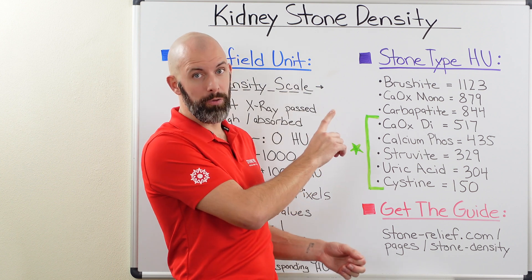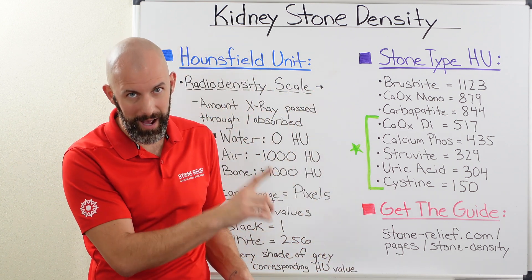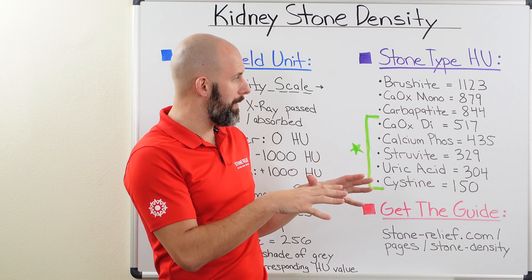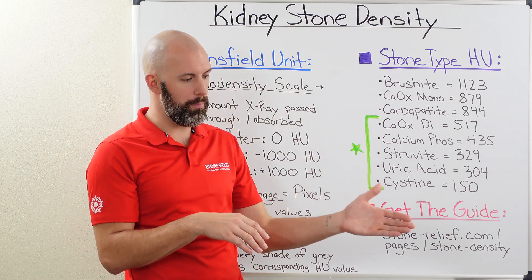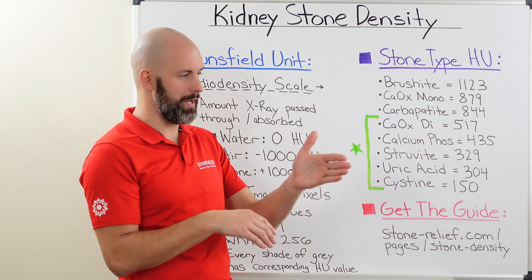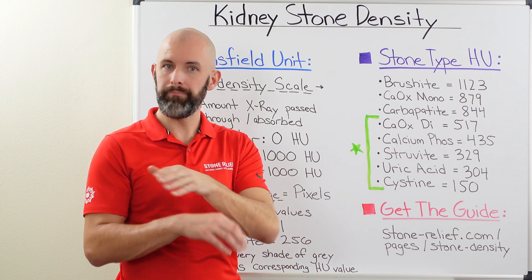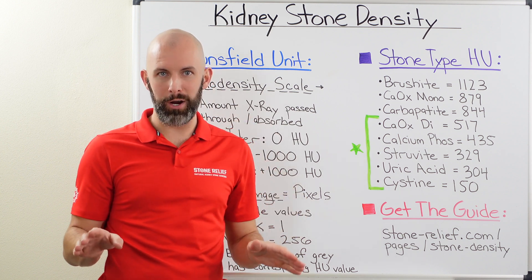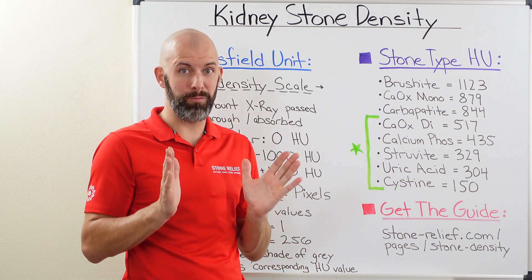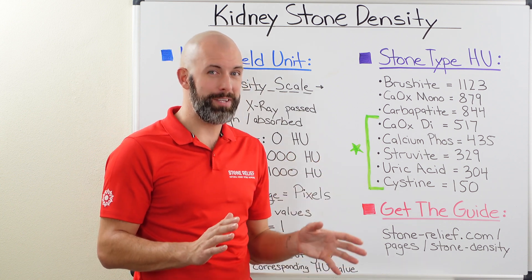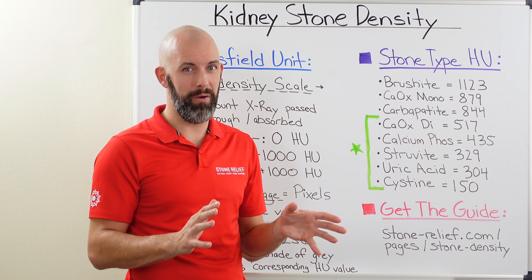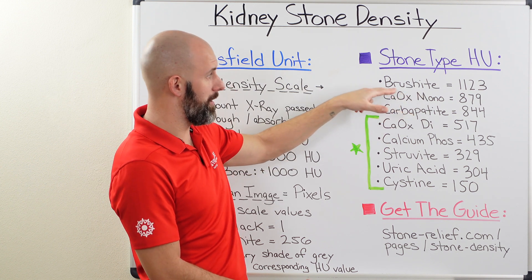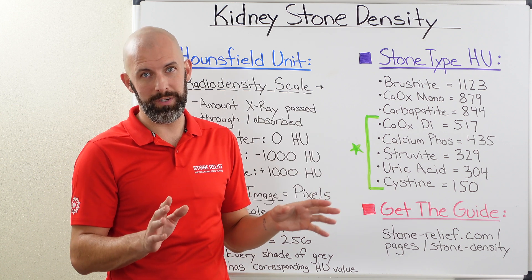Density plays a critical role in ESWL because if the stone is too dense, it cannot be broken apart by those sound waves. There is some debate in the literature — some hospitals say 850 HU or higher means no shockwave lithotripsy, others set the threshold at 1,000. Based on what we've seen, 850 HU is where we lean in terms of ESWL efficacy. That effectively rules out carbapetite, calcium oxalate monohydrate, and brushite stones as candidates for shockwave lithotripsy.